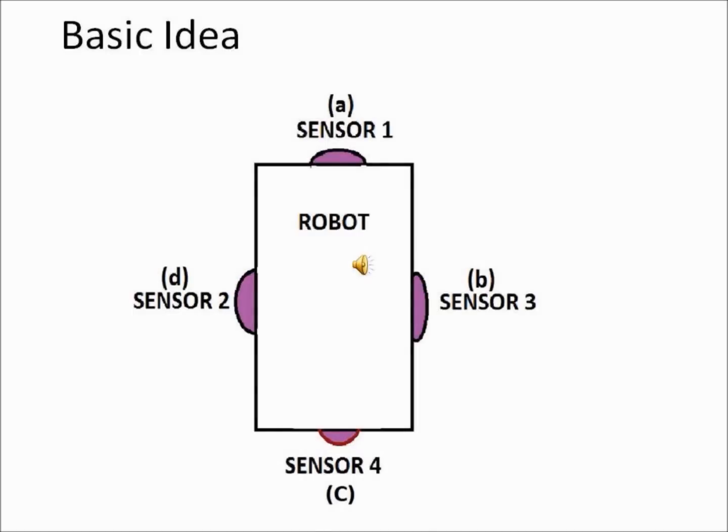Okay, so here is the basic idea of what we are actually trying to do. We have placed 4 sensors on the 4 sides of the robot which will be acting as the input for the input port.